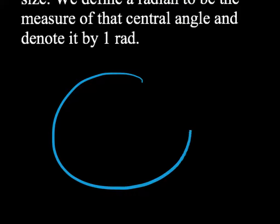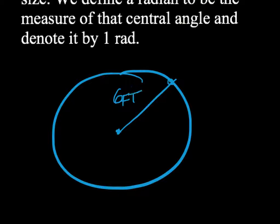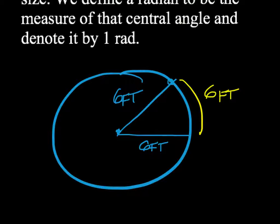Here's a circle with a center and a point out there. You have a radius of any size — I'm just going to call this radius six feet. I will now create another radius such that the arc that is generated will be the same length as the radius. So we'll make this arc six feet as well, meaning that arc has a measurement of six feet. I've done that on purpose — it doesn't occur automatically.